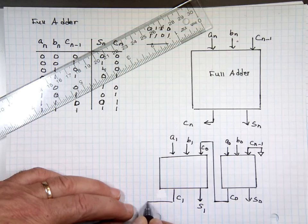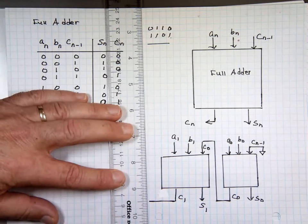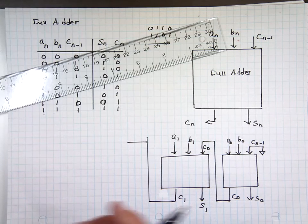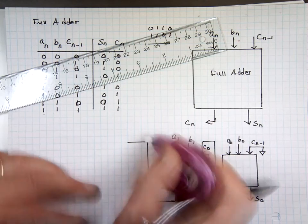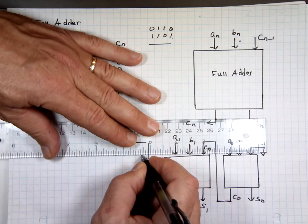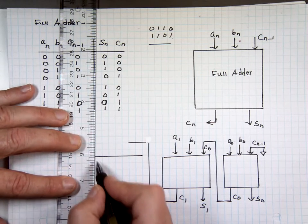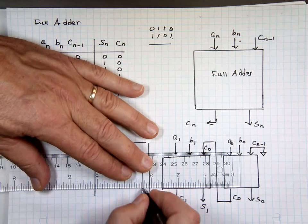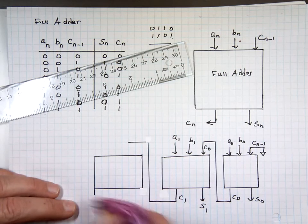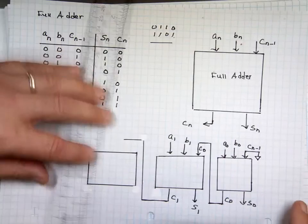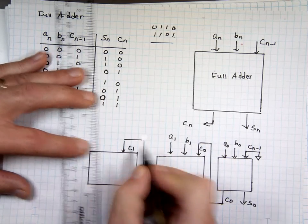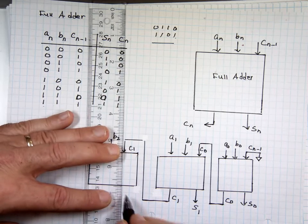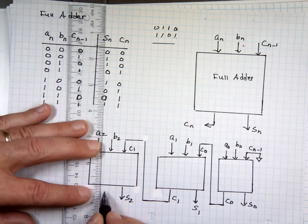Again, that carry becomes an input to another one. 4-bit adders are common all over. If you need 8-bit, you can buy 2 sets of 4. So this is C1 going in. And this is what? B2, A2, the sum of 2, and C2 and C2.